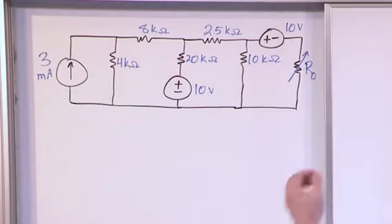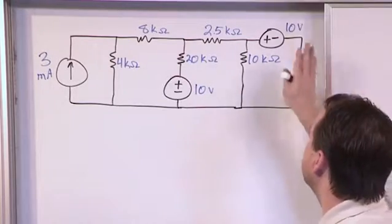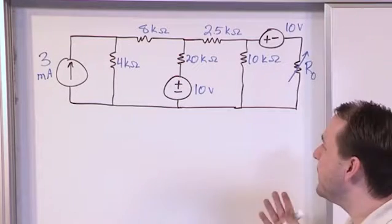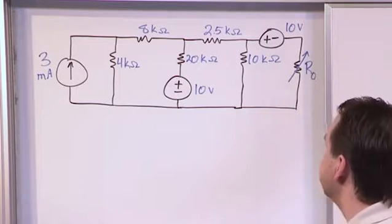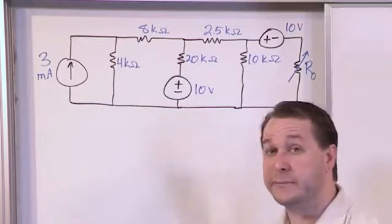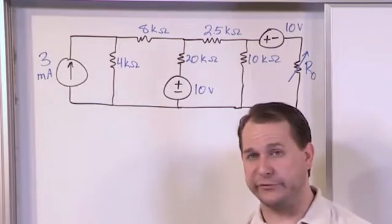So we start thinking about how are we going to calculate the Thevenin resistance, right? Now we could take this out and hook a test source up like we did before. We could do that. But I'm noticing that in this case, this is a little bit easier, really, because there are no dependent sources. There's no triangle sources anywhere.